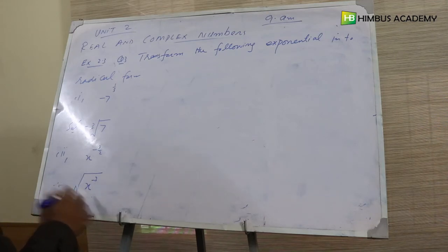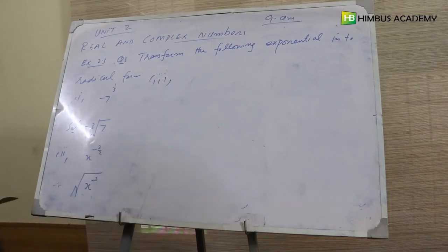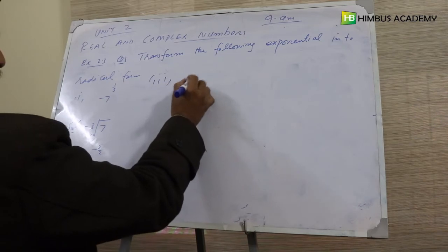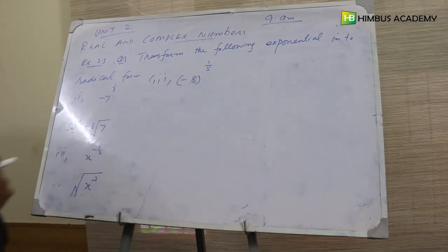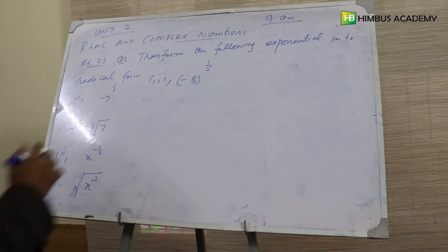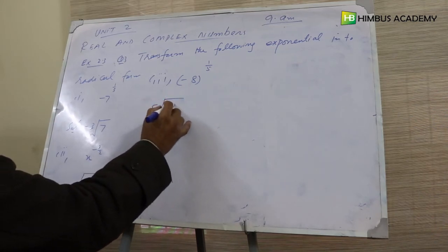Number three: minus eight power one over five. We can write this as fifth root of minus eight.